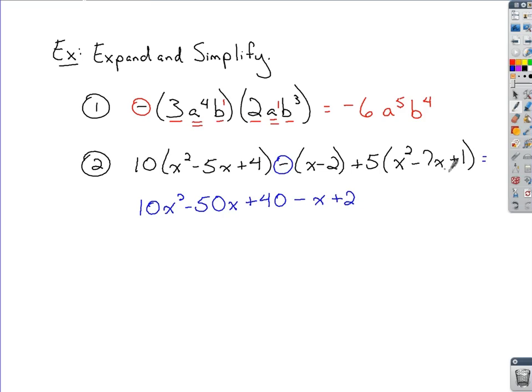So we distribute our 10 through here, and we've got 10x squared minus 50x plus 40. Got to be careful here with this negative. Do have to distribute that through to the x minus 2. We know that changes the sign, so it's minus x now and plus 2.